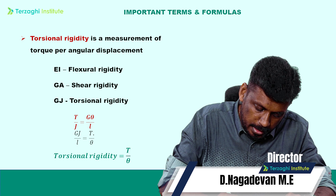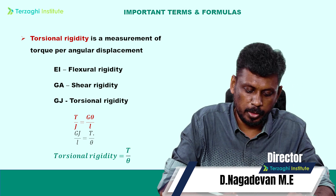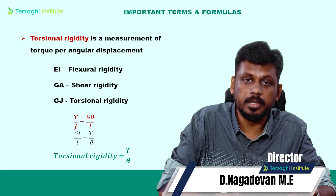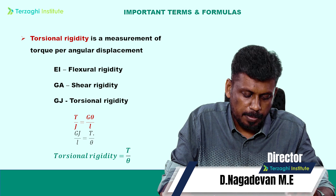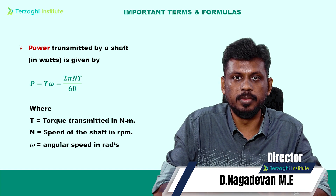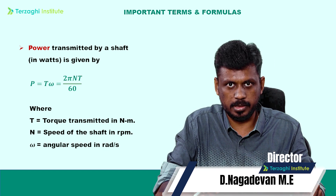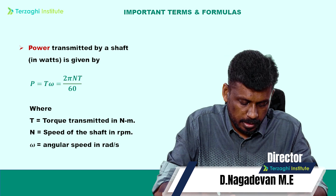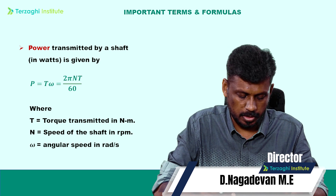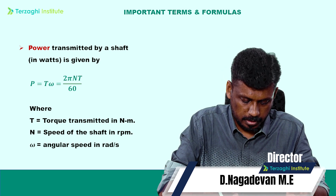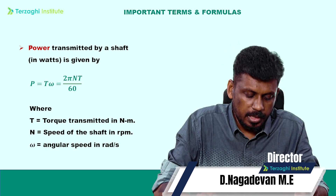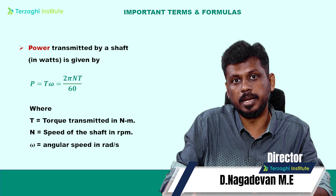Power transmitted by the shaft — the formula is 2πNT/60. N is the speed of the shaft in RPM, T is the torque transmitted in Newton-meters. Omega is the angular speed in radians per second. Power is expressed in Watts.